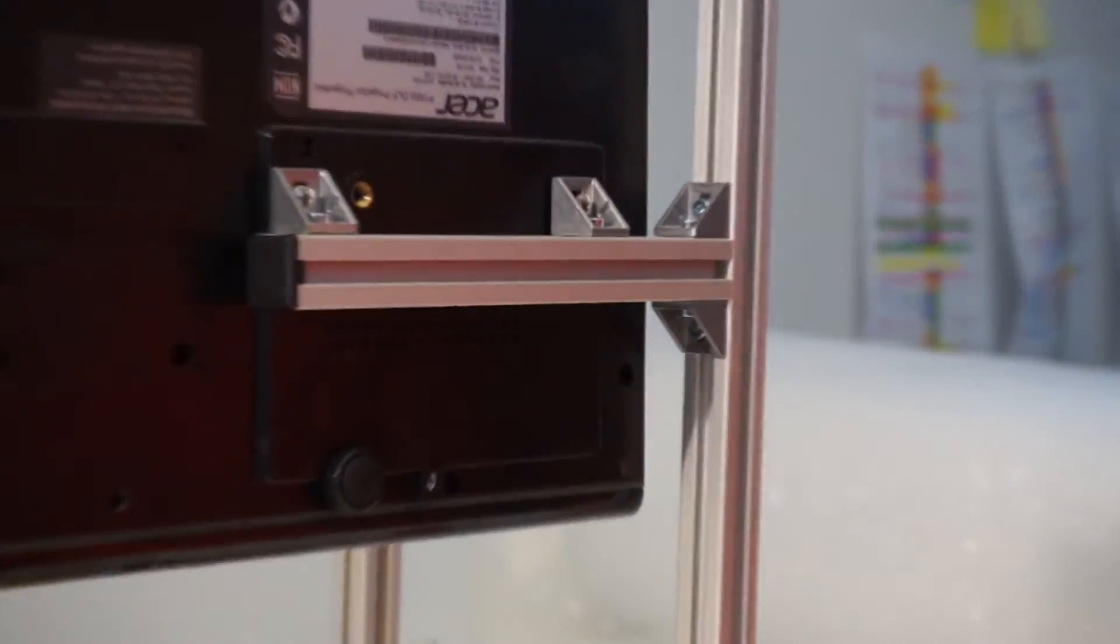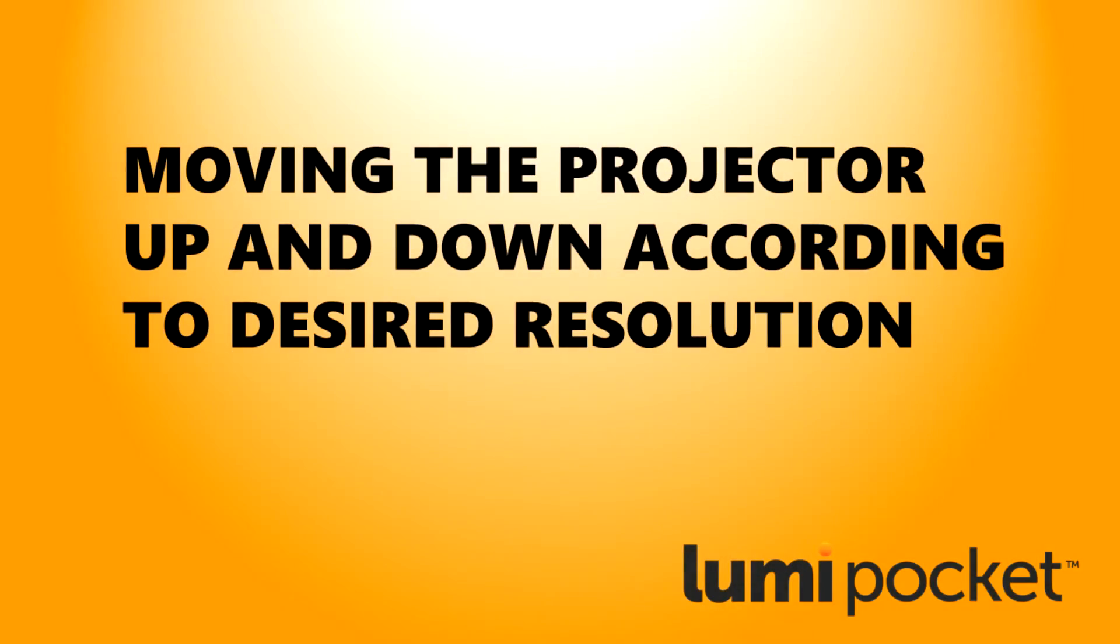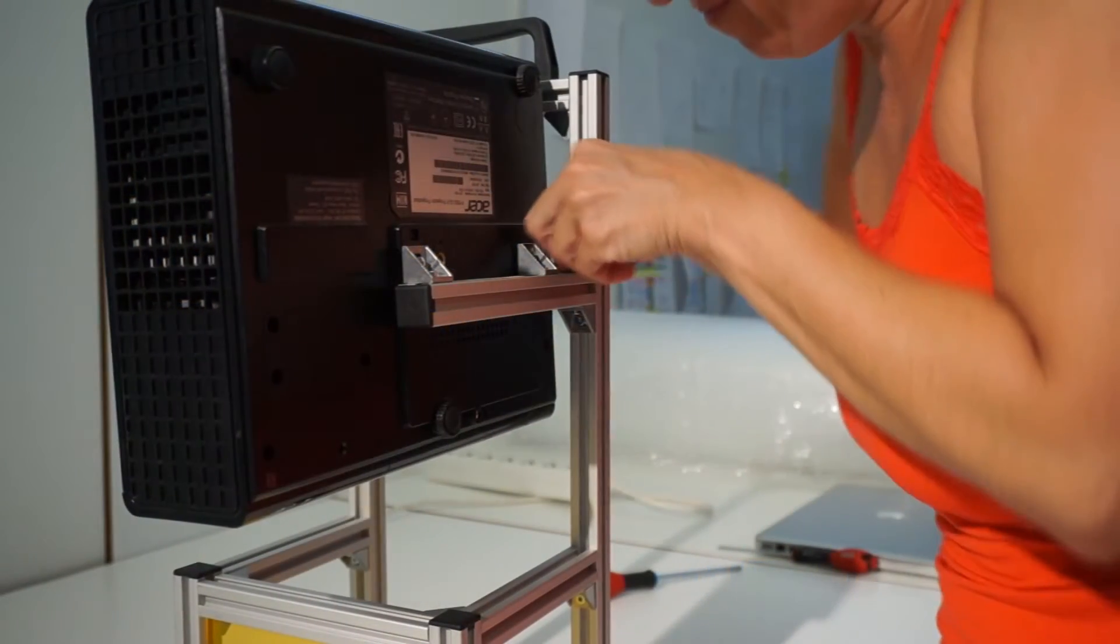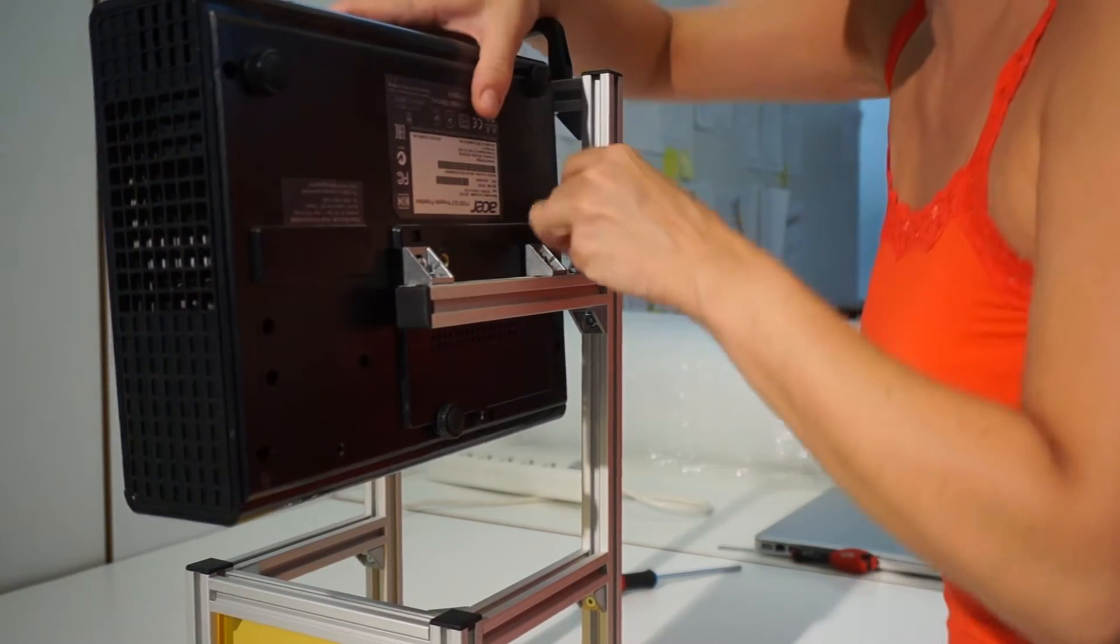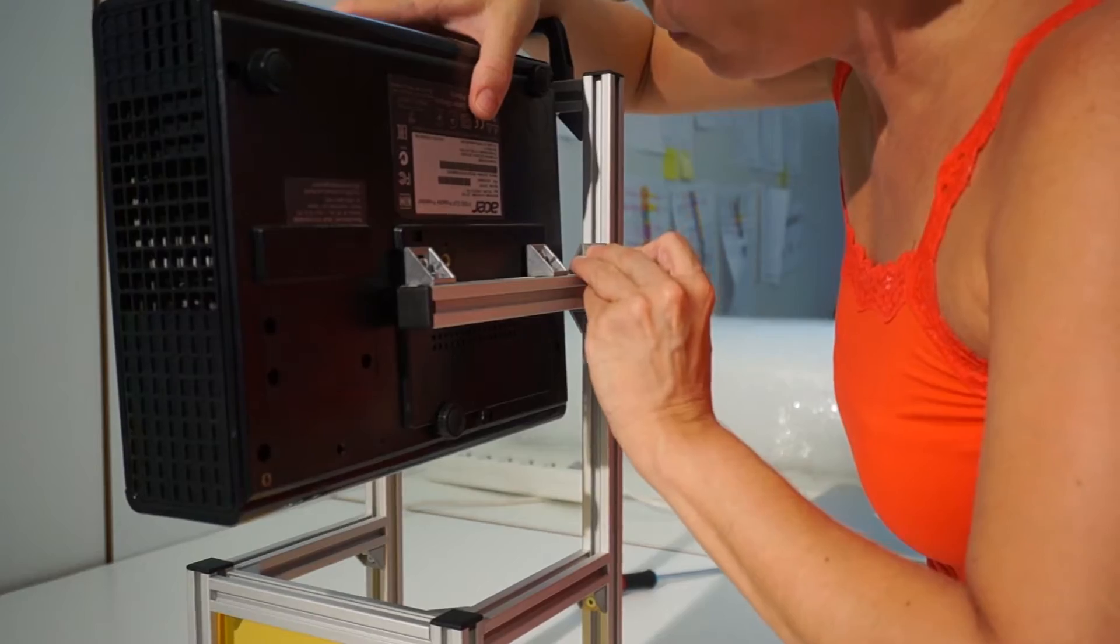Now let's see how to move the projector up and down to modify the printing resolution. With an Allen key, loosen a bit the screw holding the docking station arms.